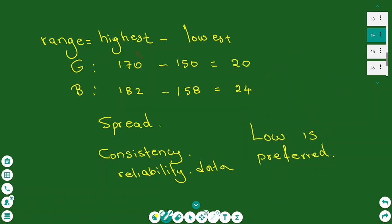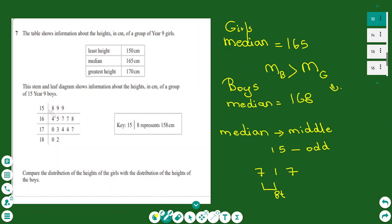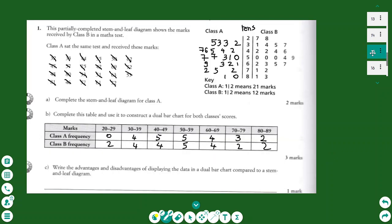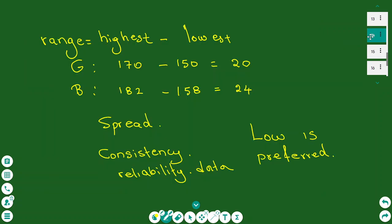You can also compare the range, which is the highest minus the lowest, showing the spread of the data and its reliability. A lower range means more reliable data. From the stem-and-leaf diagram, the lowest value is 158 and the highest is 182. Compare the range for boys and girls — if the girls have a lower range, you comment that their data is more consistent, even though the boys have a higher median height.